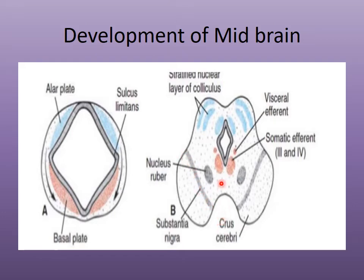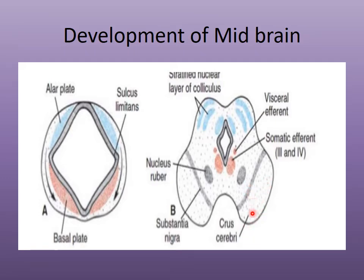The substantia nigra appears from the basal plate neuroblast cells, though some authorities suggest it may arise from the alar plate neuroblast cells as they migrate ventrally. The crus cerebri, which forms the cerebral peduncles, is formed from the marginal zone. It consists of descending fibers from the developing cerebral hemispheres and diencephalon, which later become prominent as corticopontine, corticonuclear, and corticobulbar fibers passing through the crus cerebri.